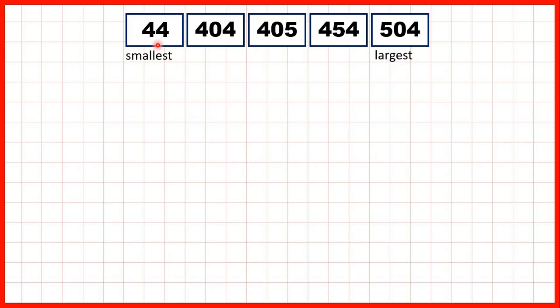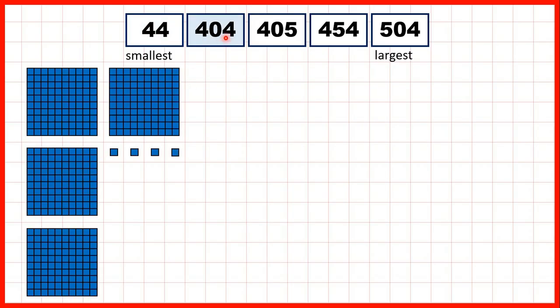Then for our next set, our smallest number was 44, which only has four tens and four ones. Then 404, which has four hundreds and four ones. Then 405, so with five ones.